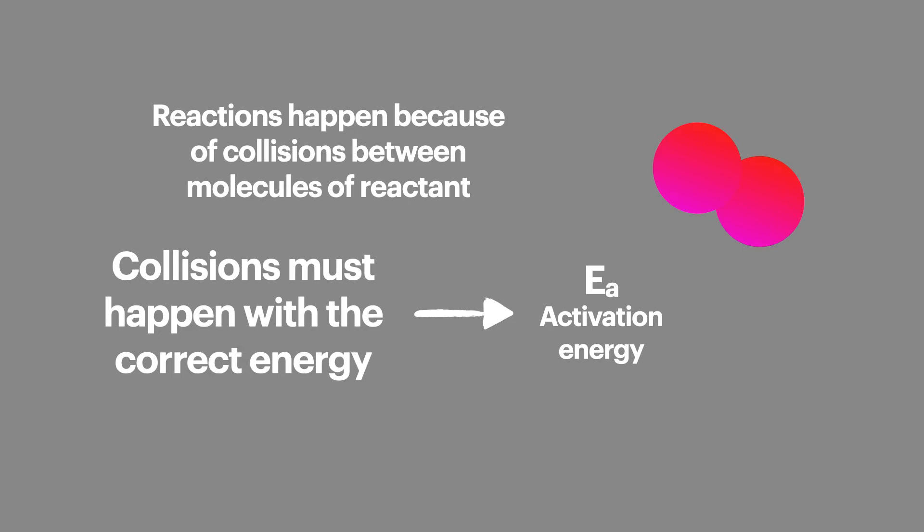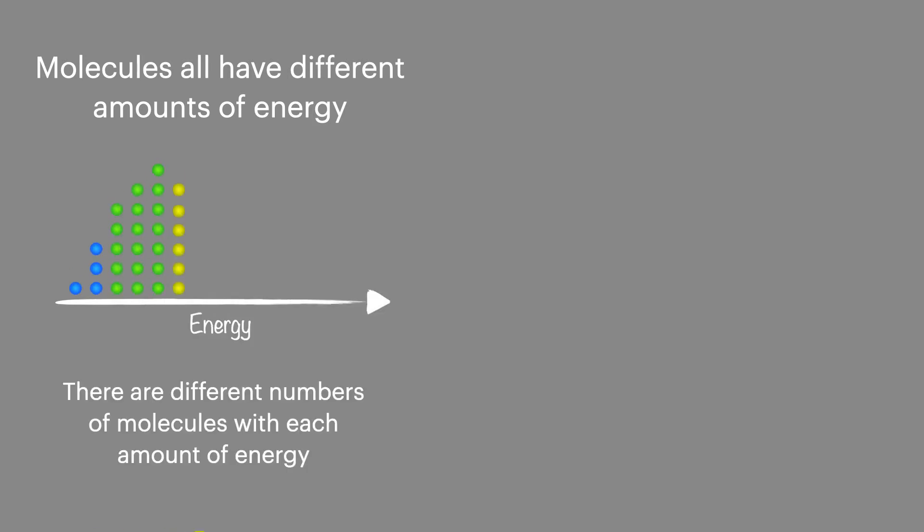In a sample of gas all the molecules have different amounts of energy. We can think of them arranged on a scale like this. There are different numbers of molecules with each amount of energy in the sample, with a few molecules having the lowest energy and a few the highest amounts of energy, with most of the molecules in the middle.